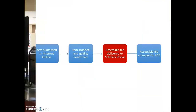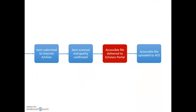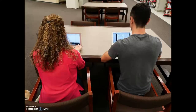Internet Archive creates alternate formats including PDF, DAISY, plain text, and EPUB, and sends the book back to Scholars Portal to be included in the ACE Portal. An email is automatically generated to notify the requesting institution about the completion of their request. The student is finally able to read the book using their choice of technology, just like any other student who borrows the print book from the library. Isn't that amazing?